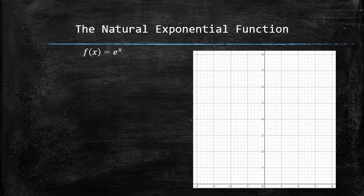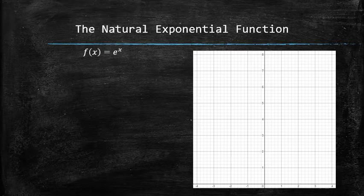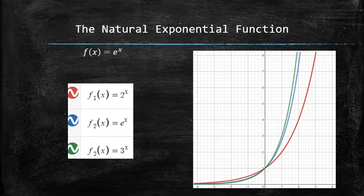But first, let's graph it. Since e, the Euler's constant, is less than 3 but greater than 2, the graph of e^x sits right between 2^x and 3^x.